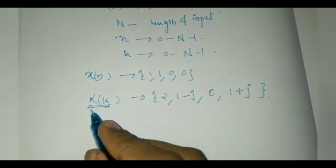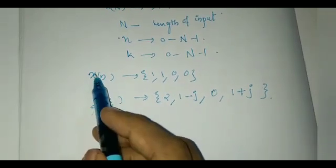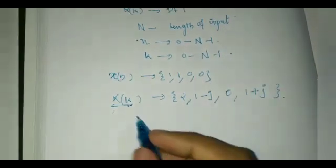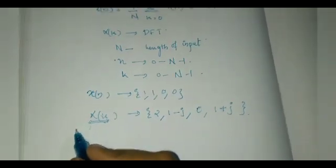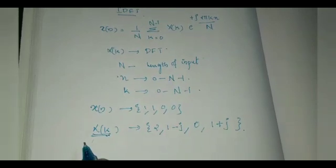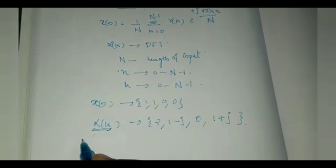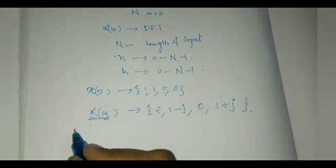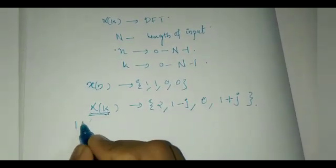Then I have to obtain the result as the same set {1, 1, 0, 0}. So I am just checking whether the IDFT gives me my original input sequence.